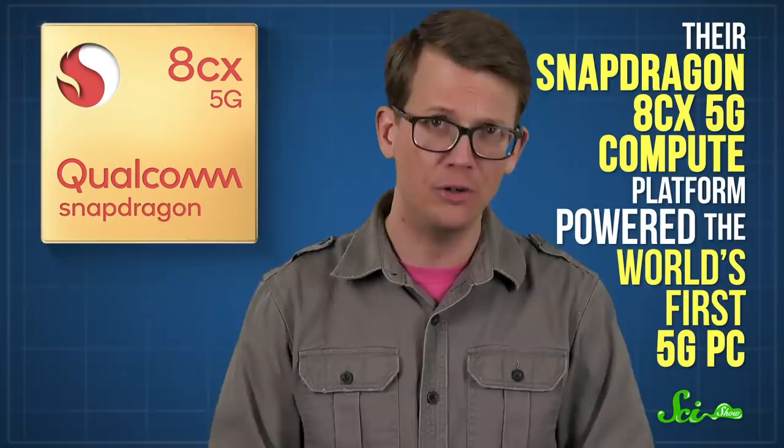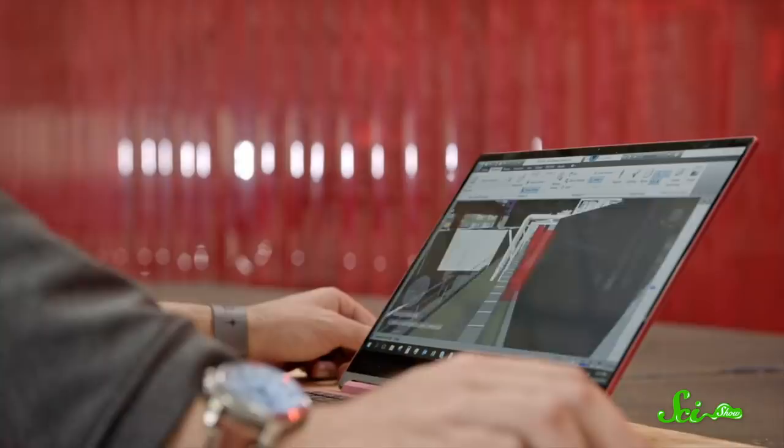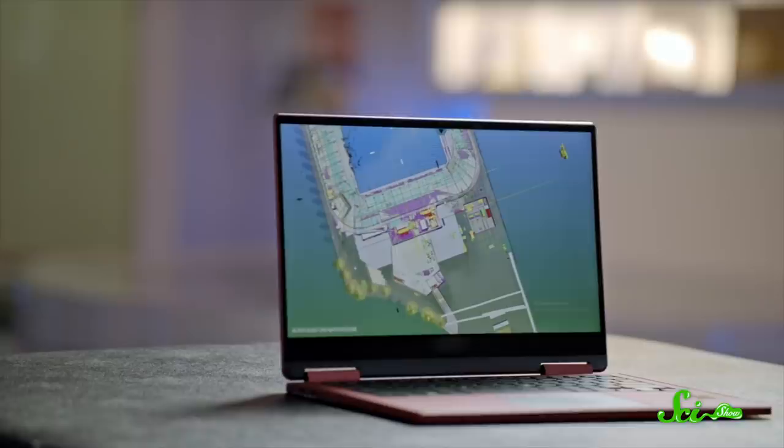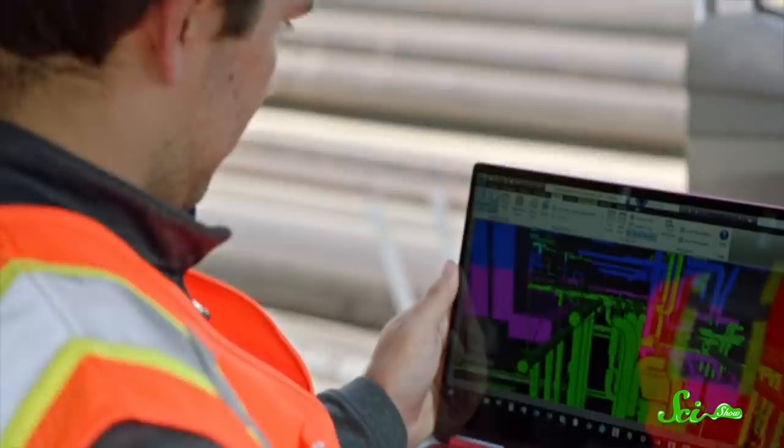This portion of the video was sponsored by Qualcomm. Their Snapdragon 8CX 5G compute platform powered the world's first 5G PC. And with a built-in 5G modem, multi-day battery life, advanced AI capabilities, and more, it combines the power and performance of a traditional laptop with some of the best of smartphone features. Devices using Snapdragon 8CX 5G are light and fanless, staying quiet and cool. And thanks to the built-in 5G and 4G connectivity, there's no need to connect to unsecure Wi-Fi or to tether to a mobile hotspot. Whether you need a computer for class or are trying to find a laptop that will work on the go, you can click the link in the description to learn more about the specs of this platform.